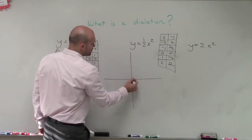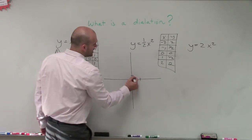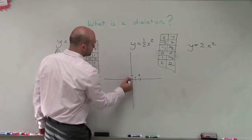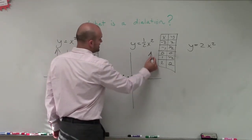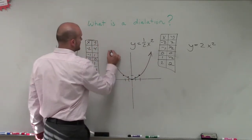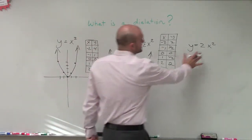And when we go ahead and graph these points, what we notice is when it goes to 1, instead of going up 1, I only go half. And when I go over 2, now I go up to 1. So you can see that this graph is going to look different than the parent graph. And what it's going to be is it's going to be stretched horizontally.